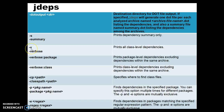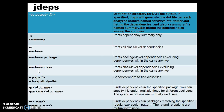If you specify -s or -summary, this will print the dependency summary only. If you specify -v or -verbose, this will print all class-level dependencies. If you specify -verbose:package, this will print package-level dependencies excluding dependencies within the same archive. If you want to print class-level dependencies excluding dependencies within the same archive, you use -verbose:class.